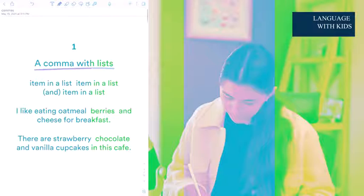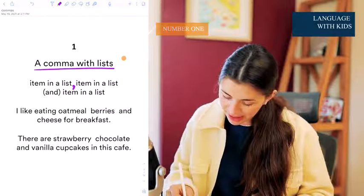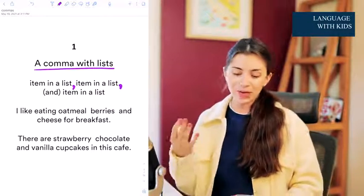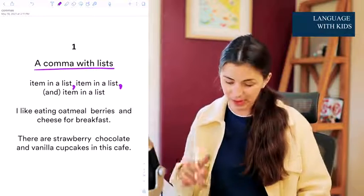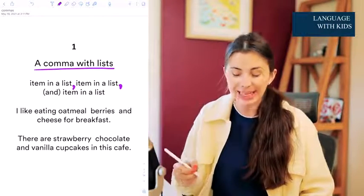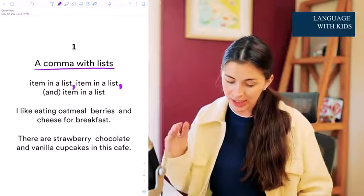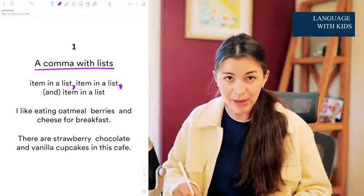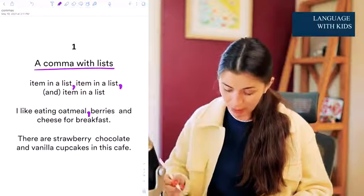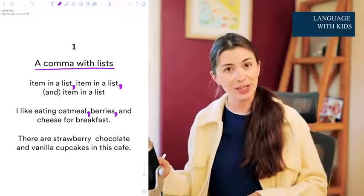Rule number one — this one is pretty obvious, pretty straightforward. Item in the list, comma, item in the list, comma, and then you either use 'and' or you just put a comma. Let's look at the example: I like eating oatmeal, berries, and cheese for breakfast.